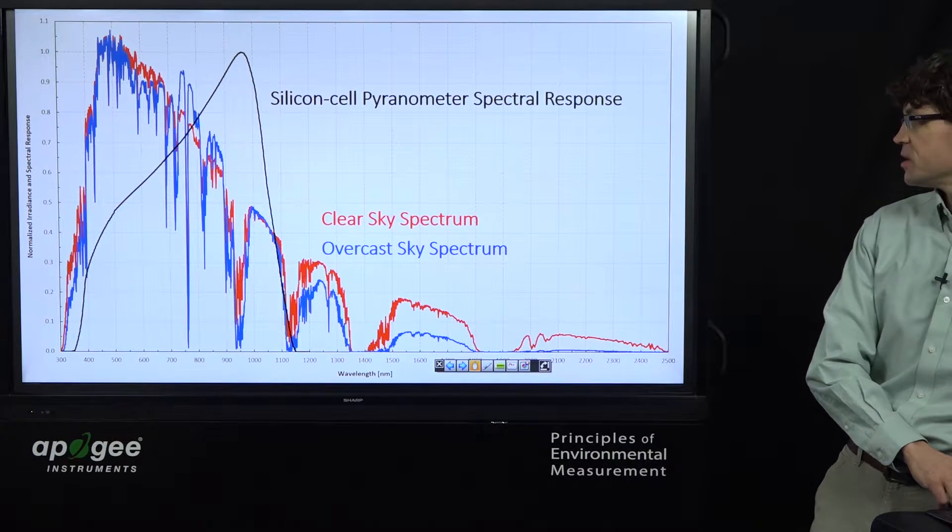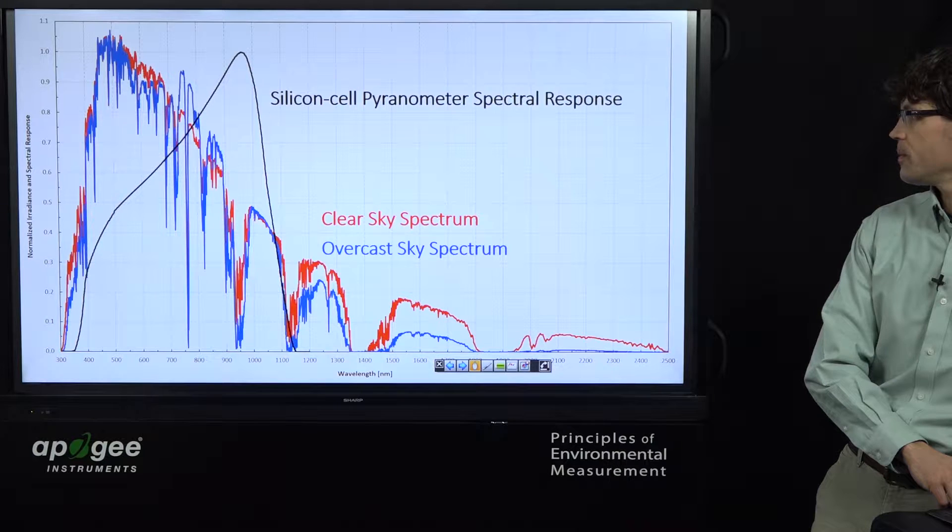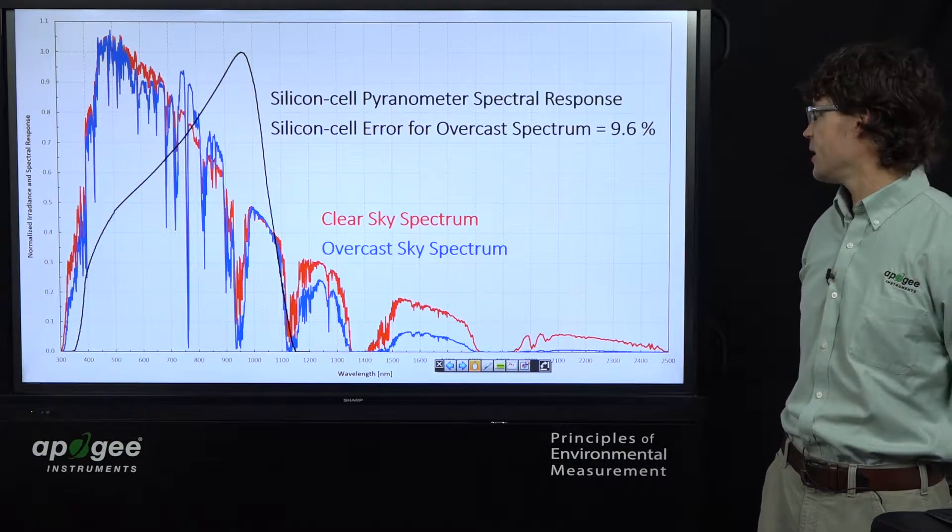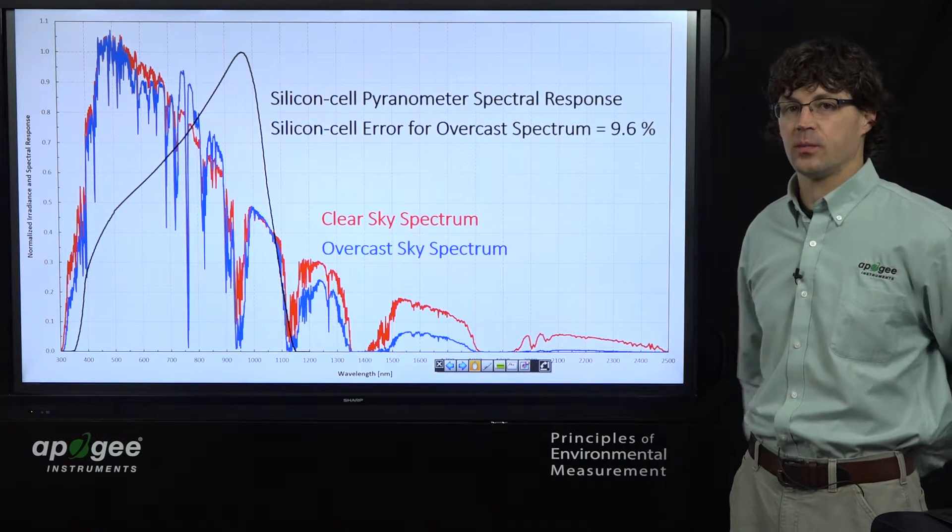So if we assume calibration to the clear sky spectrum, the theoretical error prediction for the overcast sky spectrum is about 10%.